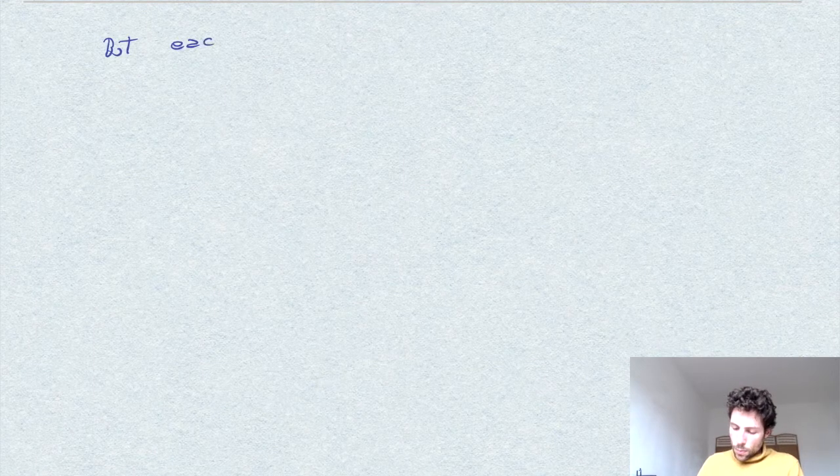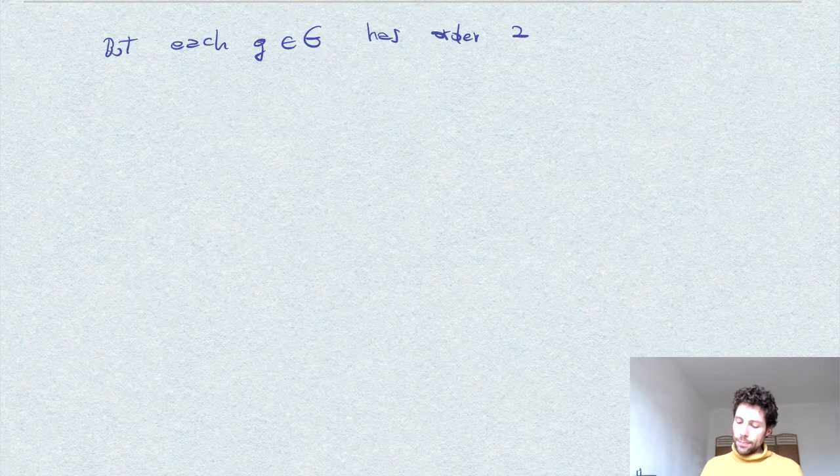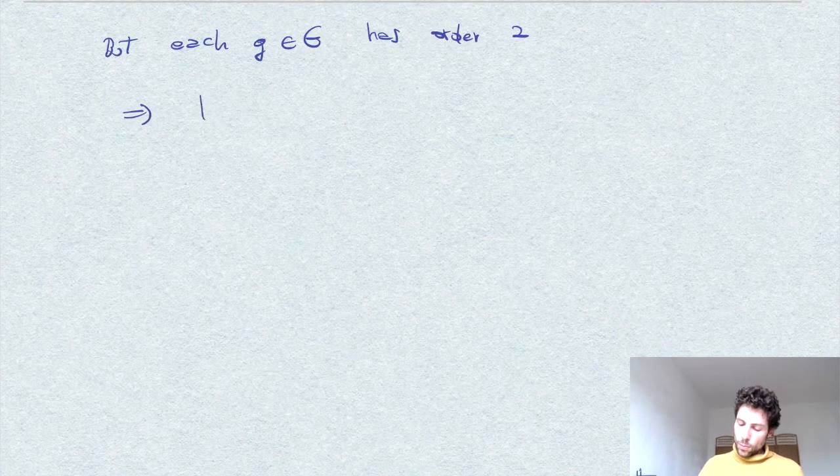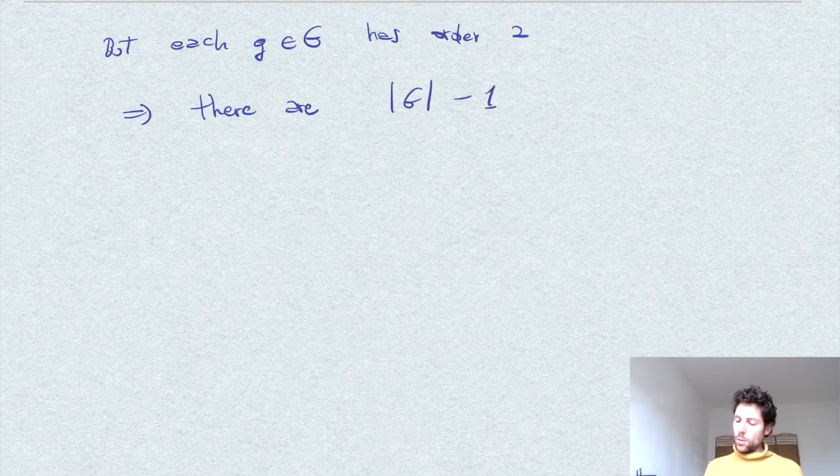So each such M corresponds to a subgroup of order 2. But of course, by assumption, each element has order 2, and therefore we have exactly |G| minus 1.